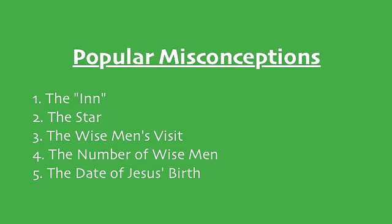I'm reading from the ESV. Does anybody have something different? New King James says 'inn.' One version says 'no guest room available.' The Greek word used here, translated as 'inn,' is kataluma. This word is only used three times in the New Testament, and twice in the Septuagint — the Greek translation of the Old Testament. This is the only time in English translations it's translated as 'inn.'